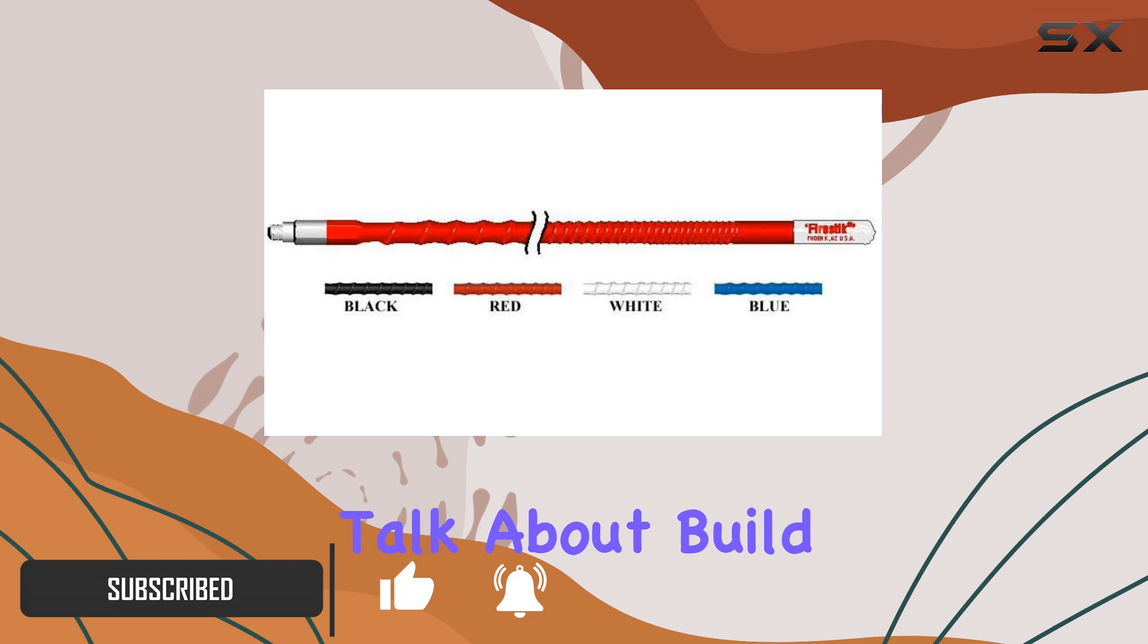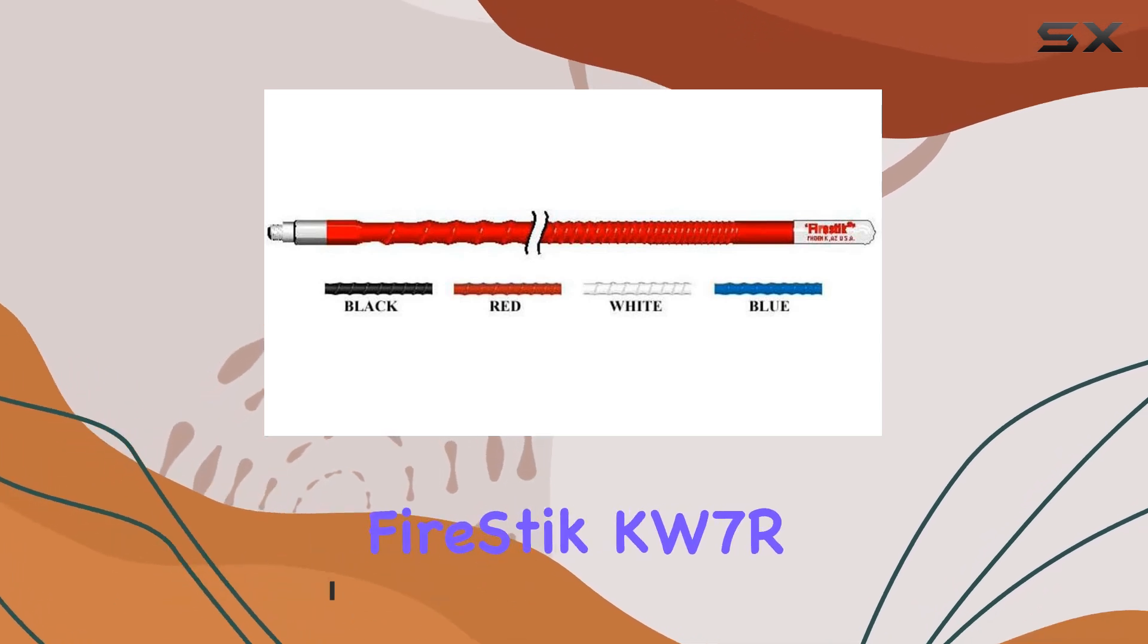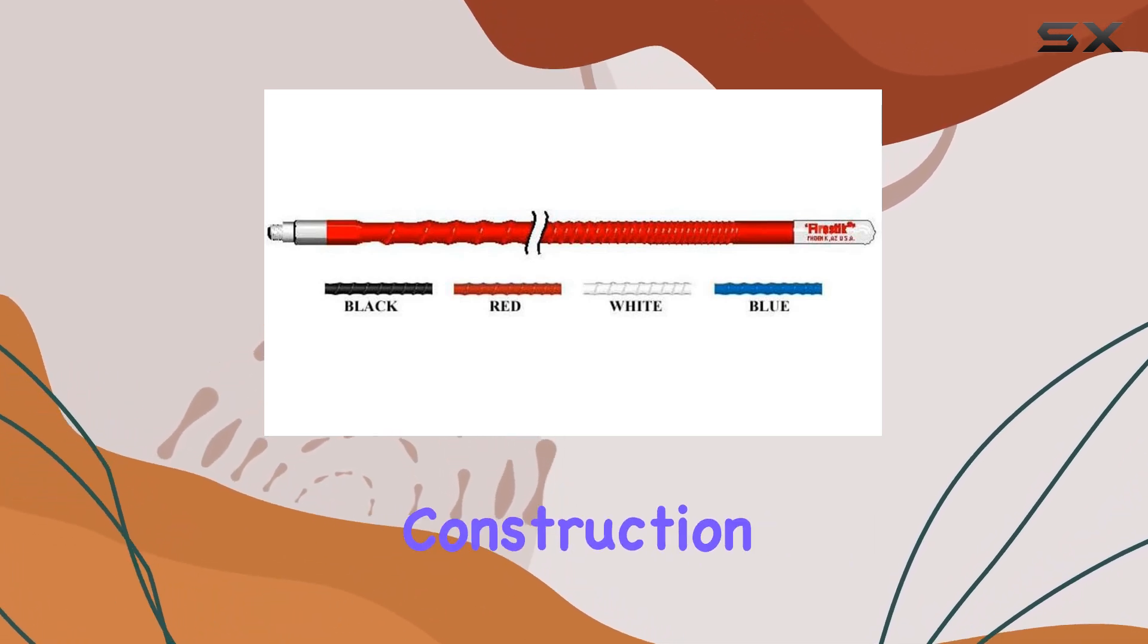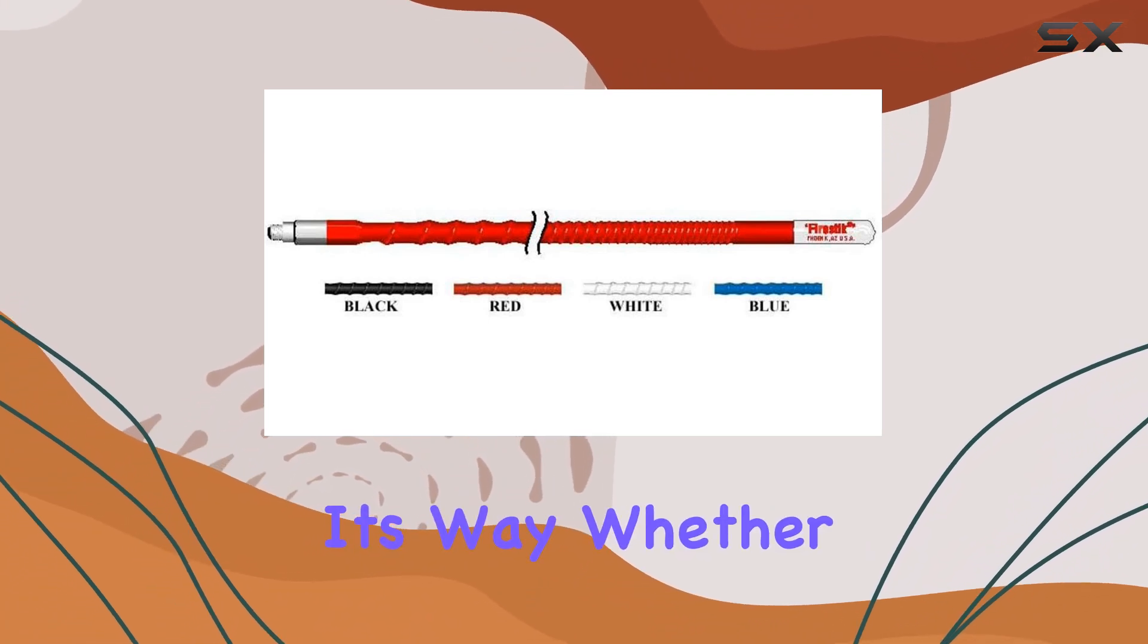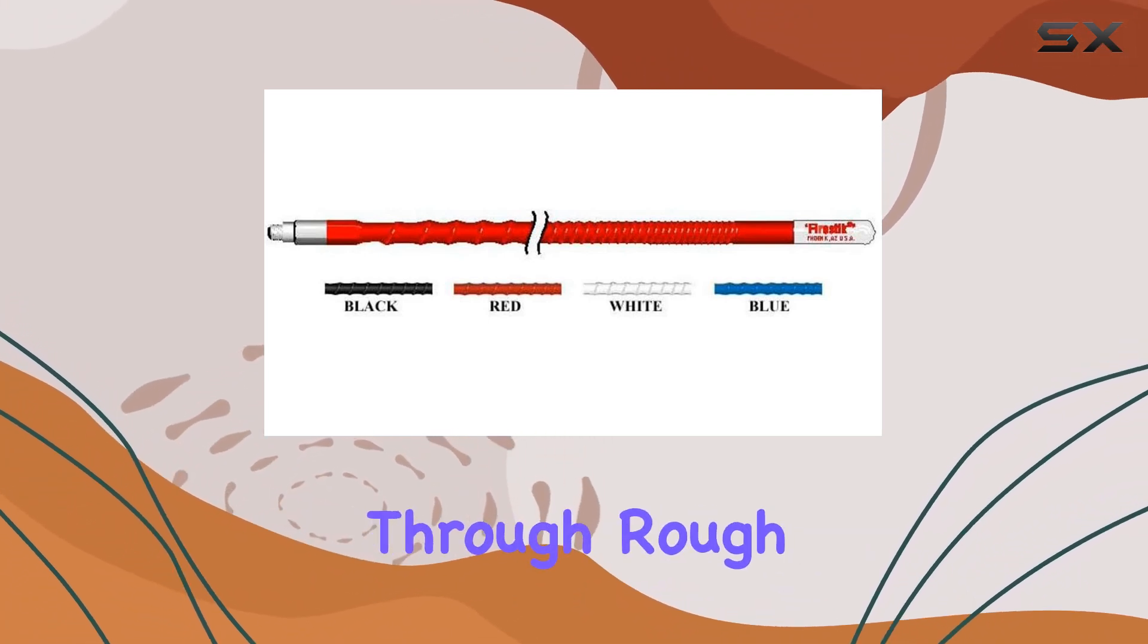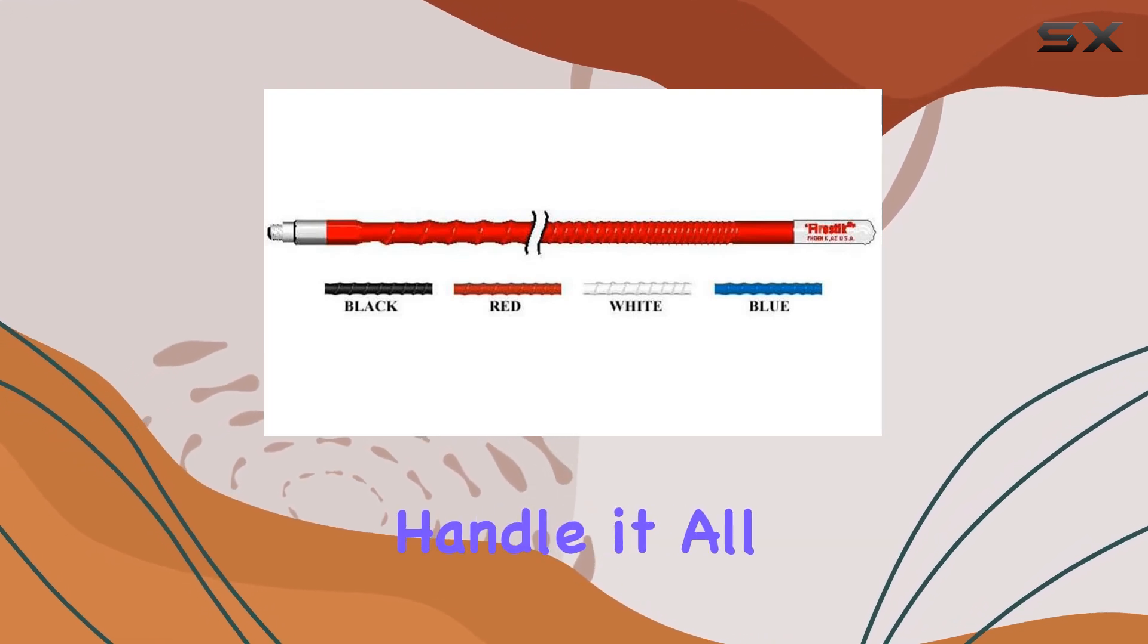First off, let's talk about build quality. The Fire Stick KW7R boasts a heavy-duty construction that's built to withstand whatever Mother Nature throws its way. Whether you're cruising down the highway or off-roading through rough terrain, this antenna can handle it all.